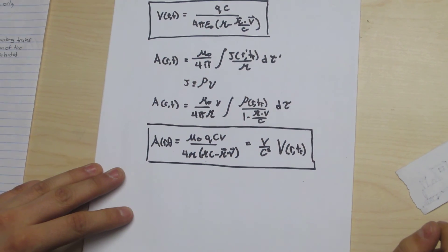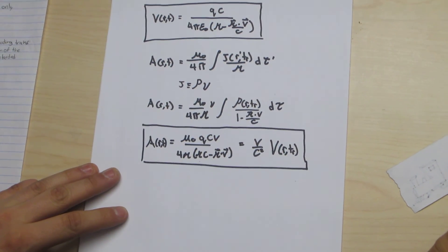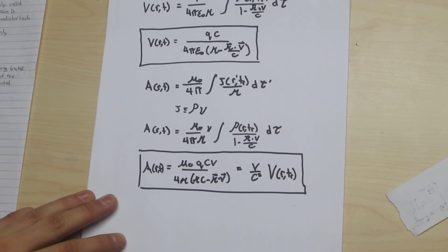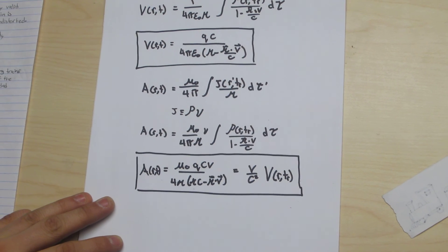And there you have our two expressions for the vector and scalar potentials of a moving charge, of a point charge moving along a specified trajectory omega t.